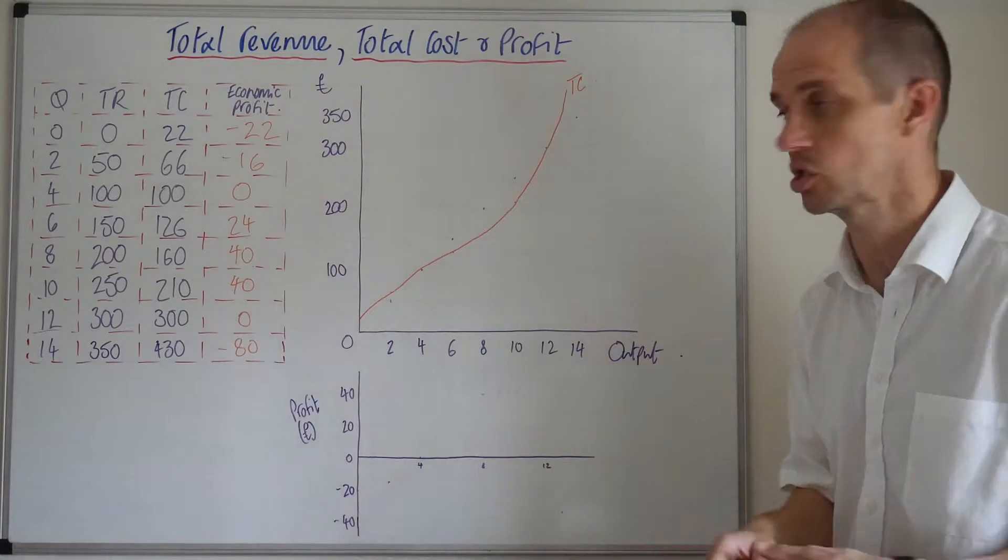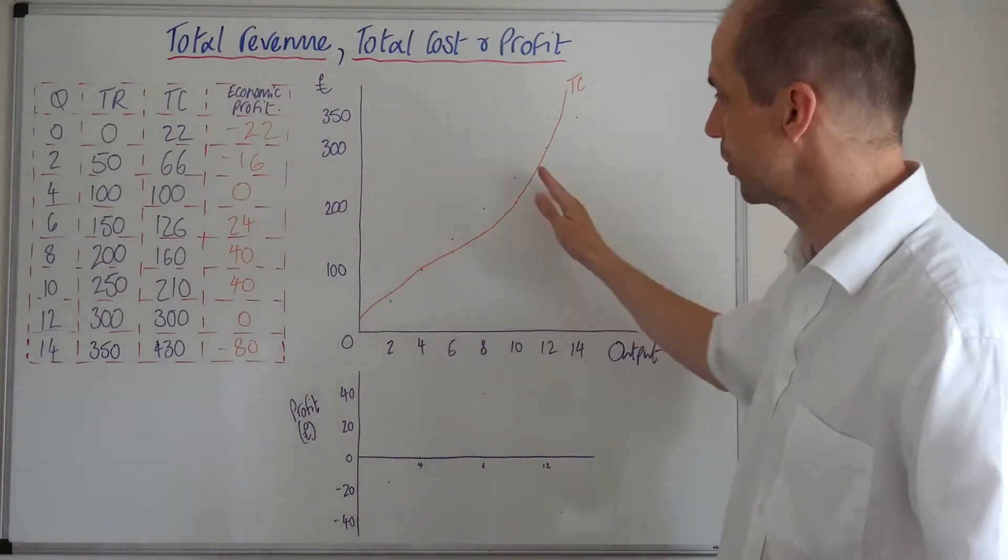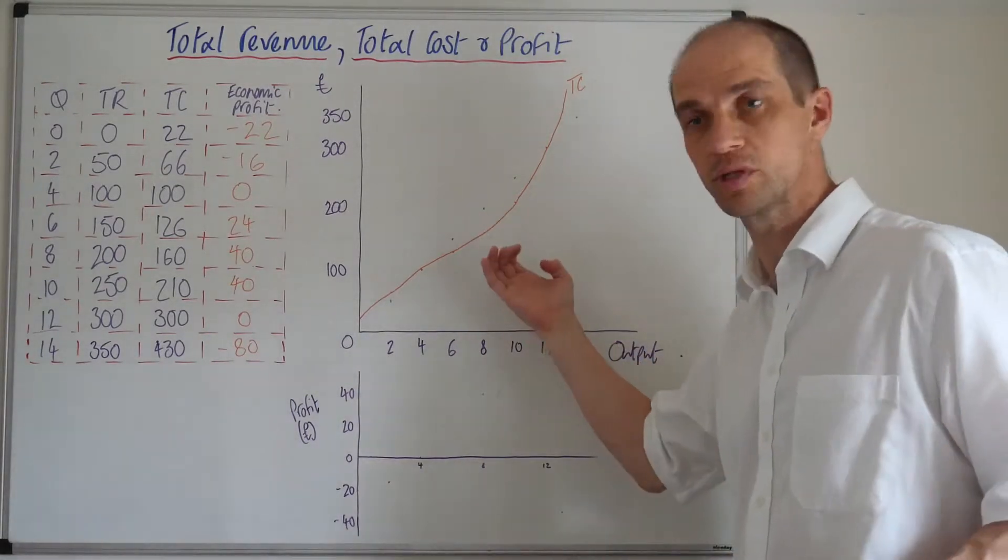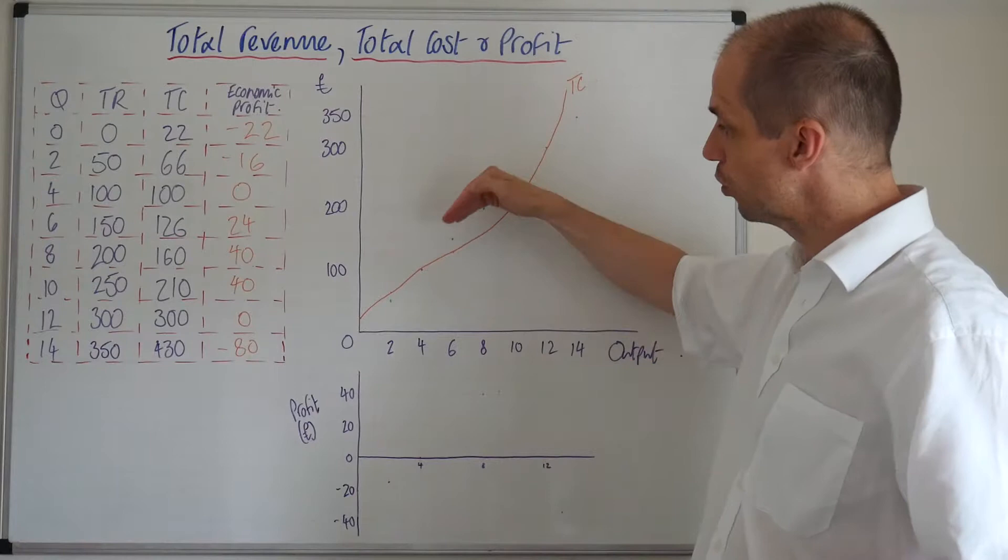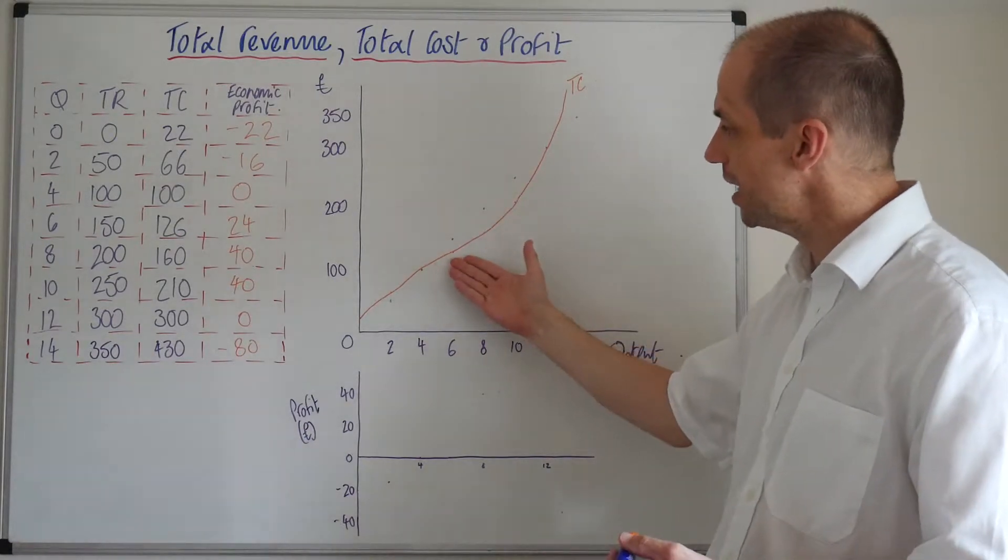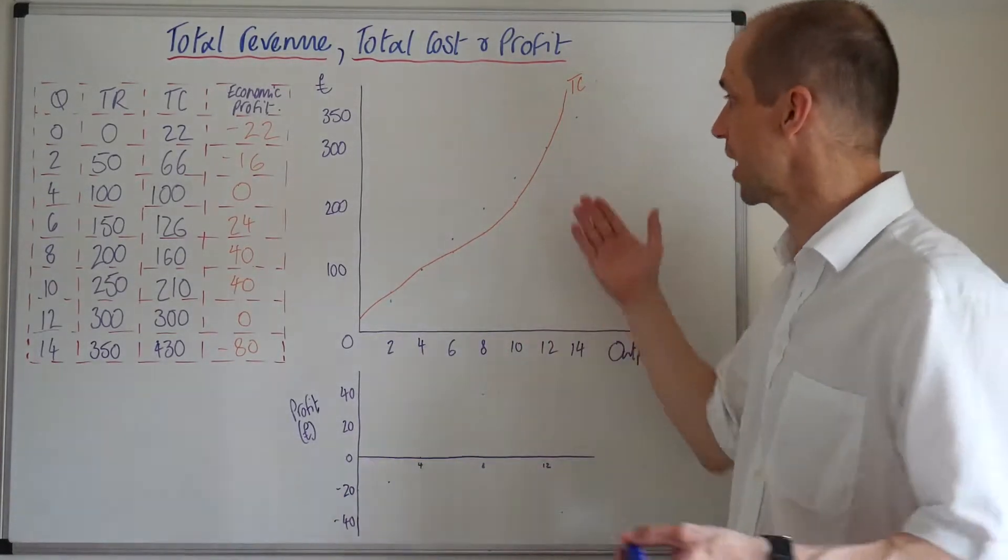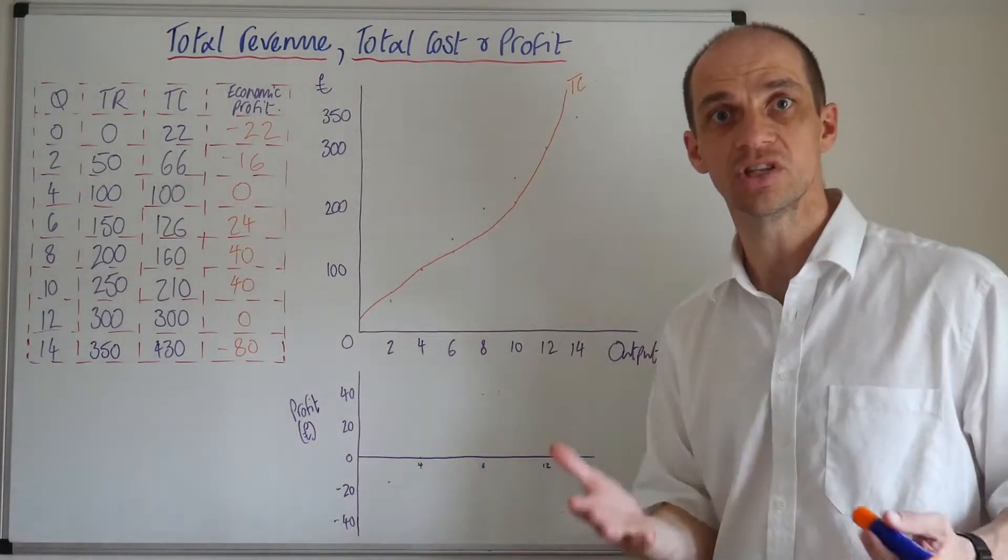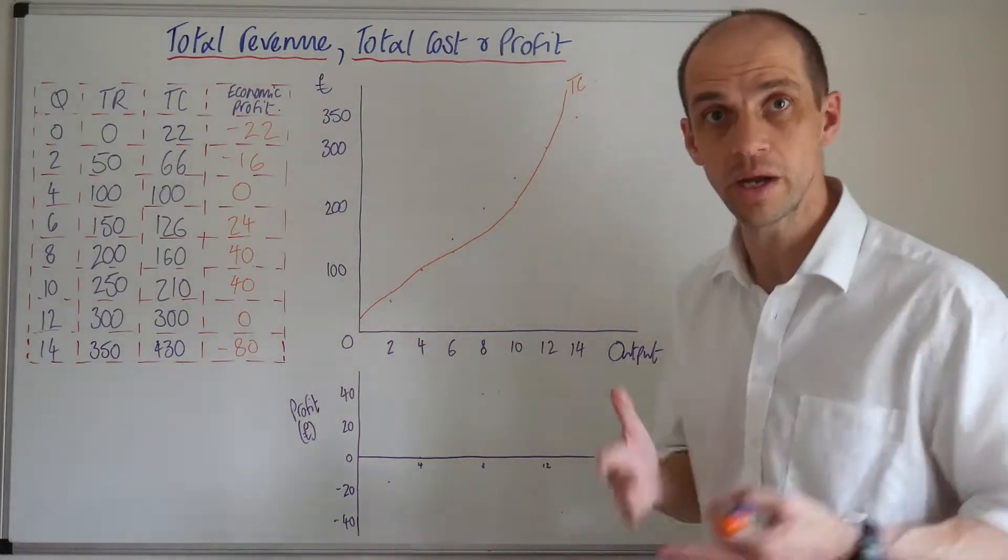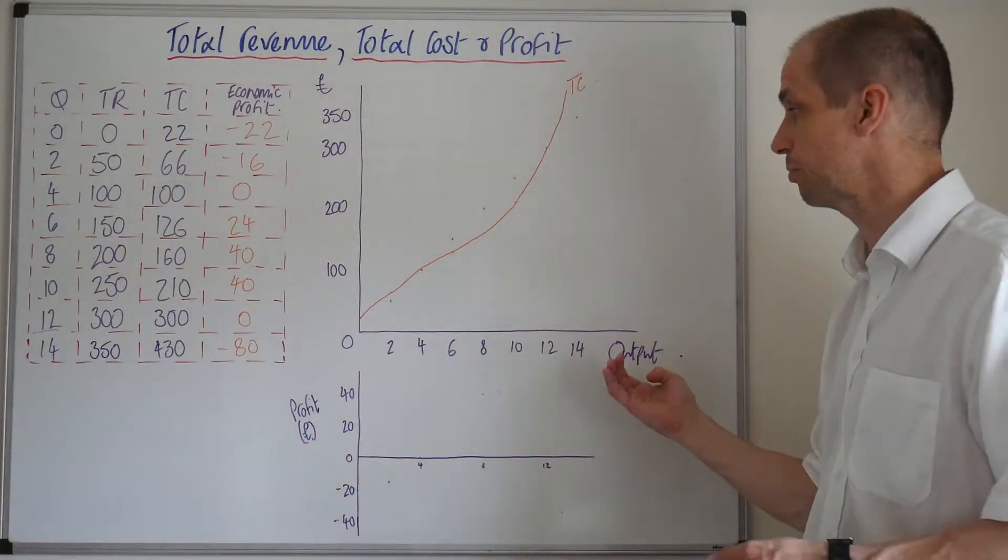So there's our total cost line. So notice there is a point here where we're experiencing economies of scale, there's increasing returns to scale, and therefore we see this gradient here eases slightly before then diseconomies of scale later set in, and decreasing returns to scale are evident. And therefore, the gradient of the total cost curve becomes much, much steeper as output increases.